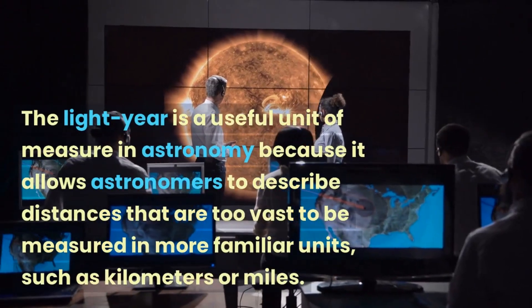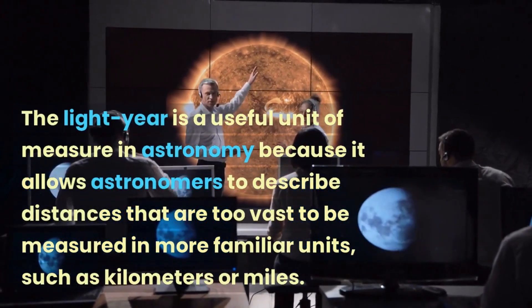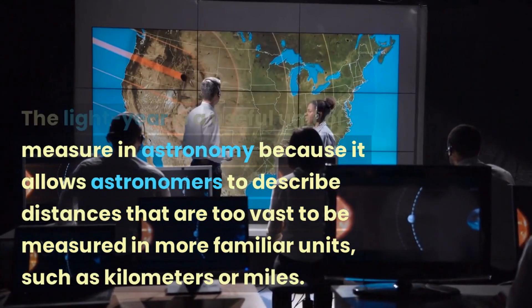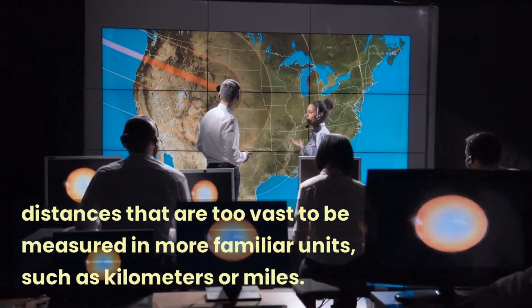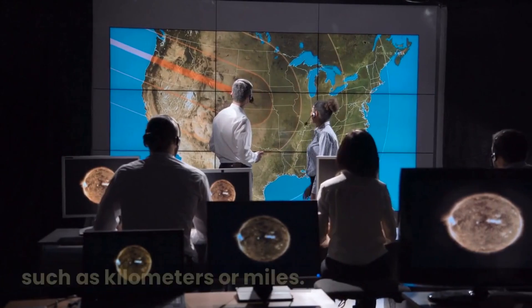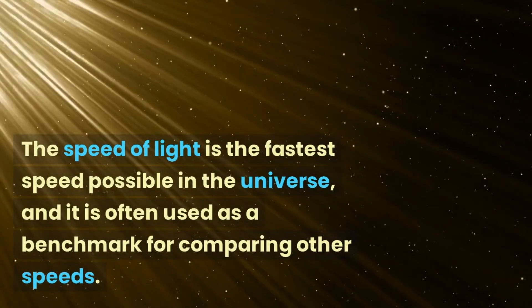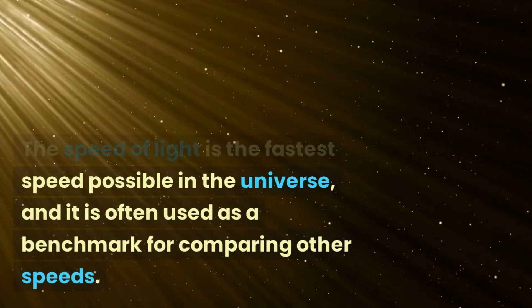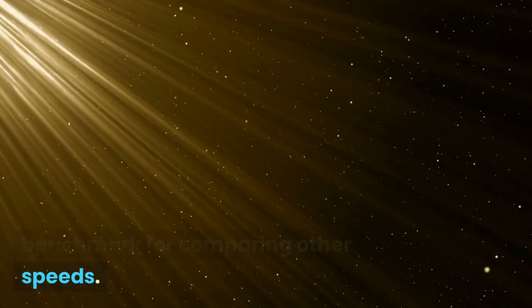The light year is a useful unit of measure in astronomy because it allows astronomers to describe distances that are too vast to be measured in more familiar units, such as kilometers or miles. The speed of light is the fastest speed possible in the universe, and it is often used as a benchmark for comparing other speeds.